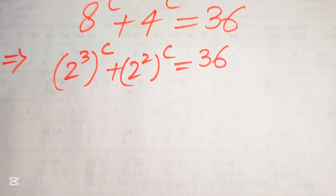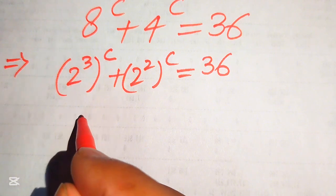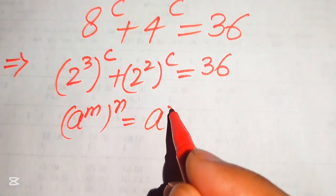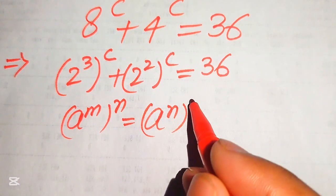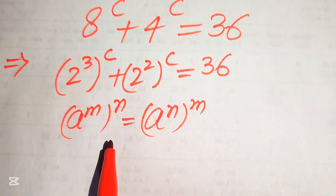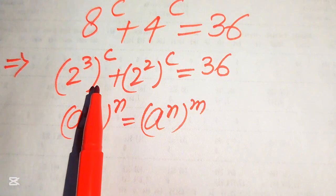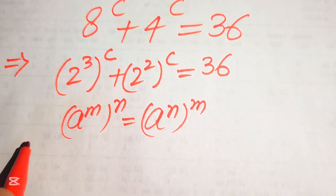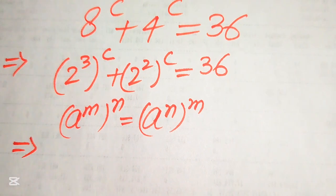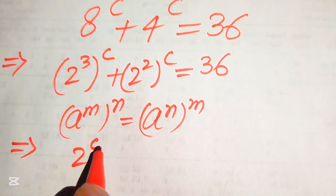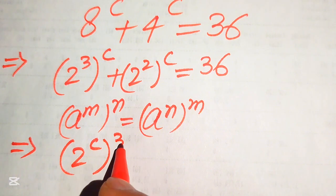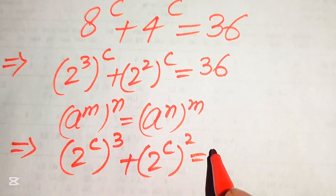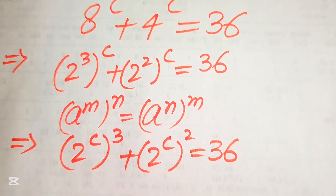Here we use a nice exponent law: a to the power of m, to the power of n, equals a to the power of m times n. This means we can interchange the order of exponents. So we rewrite the equation as (2^c)³ plus (2^c)² equals 36.